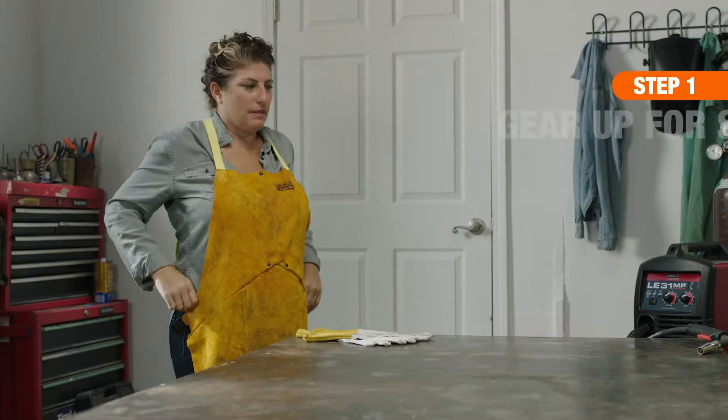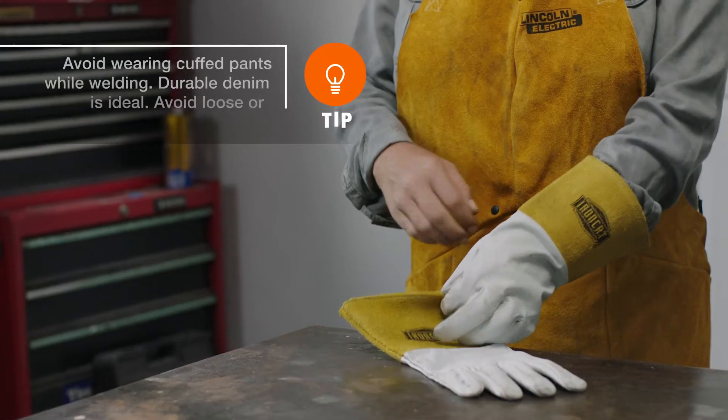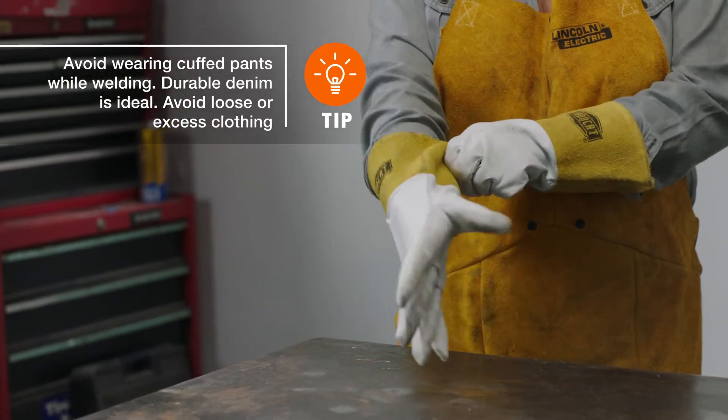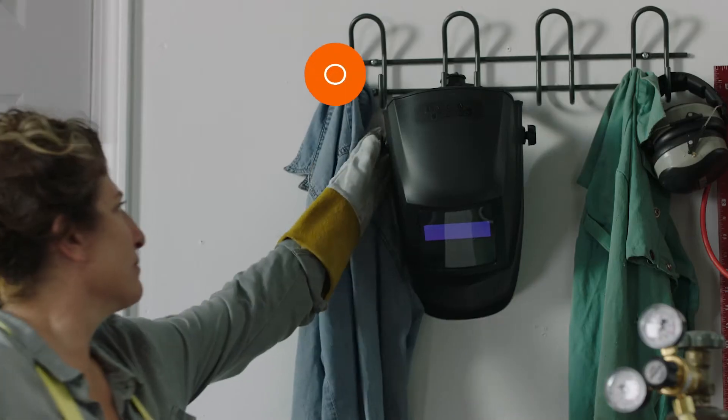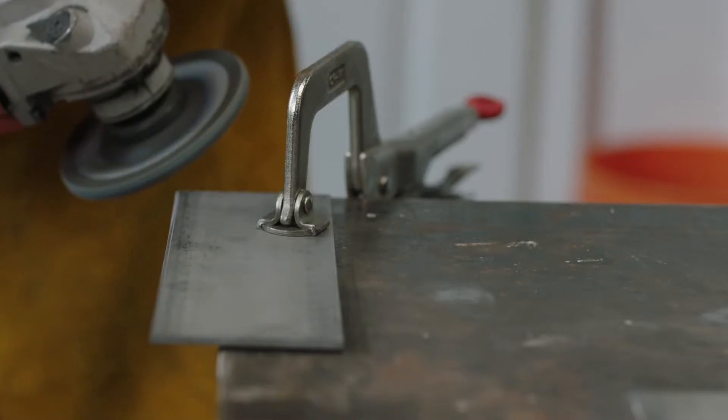First, put on a leather welding apron or jacket and welding gloves to protect your skin. Then protect your eyes with an auto-darkening helmet. Put safety glasses on before you begin cleaning your base metal.